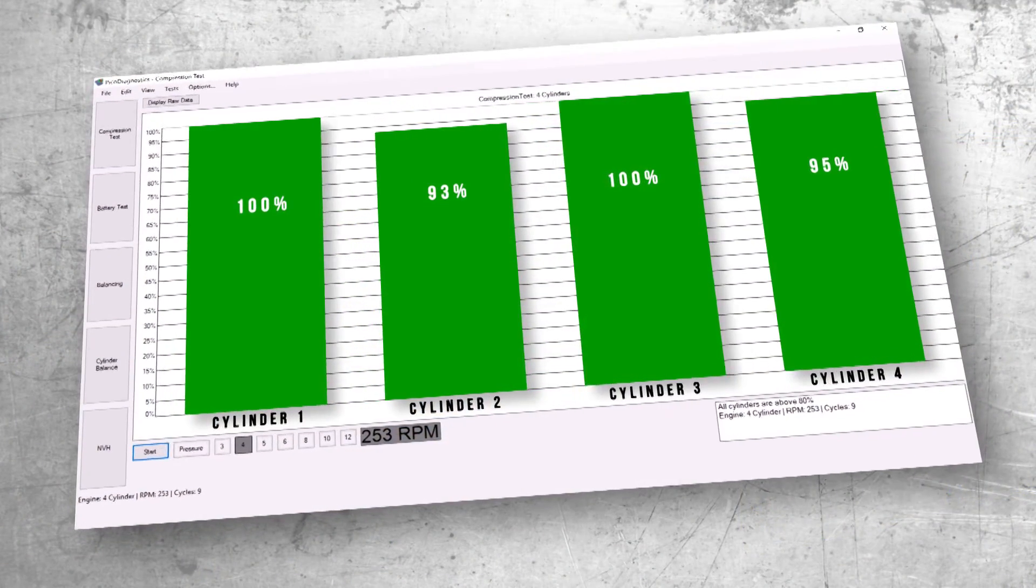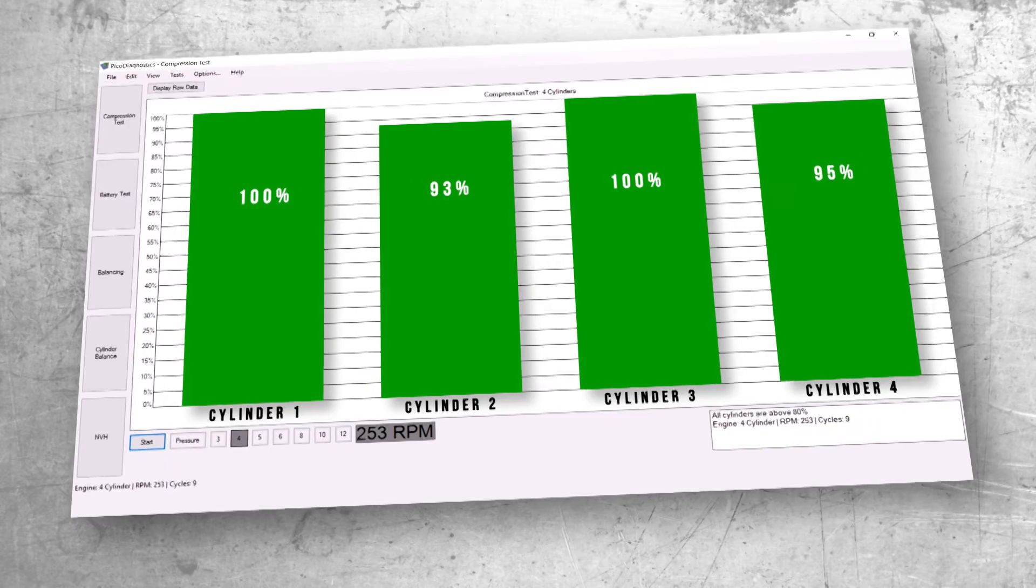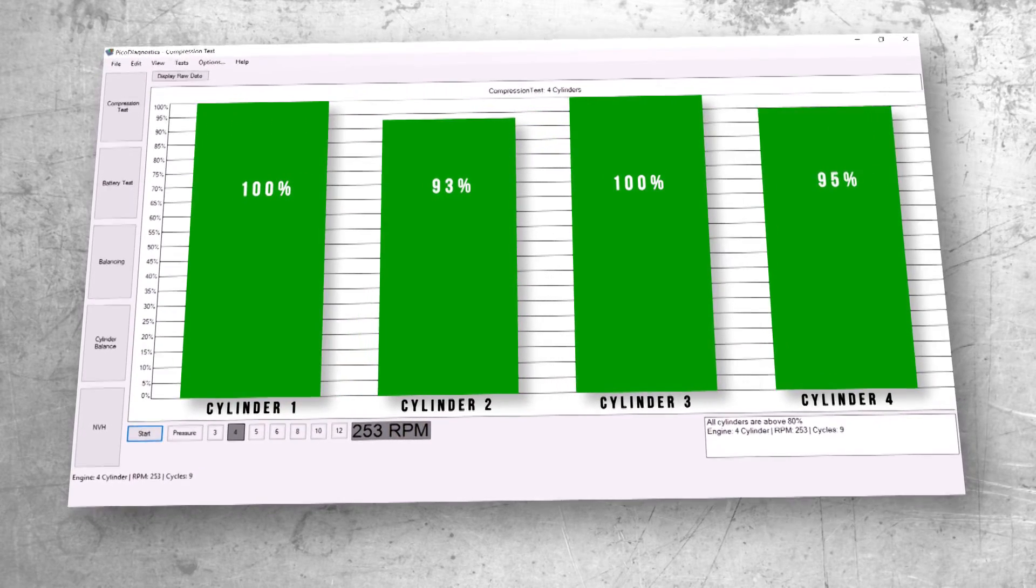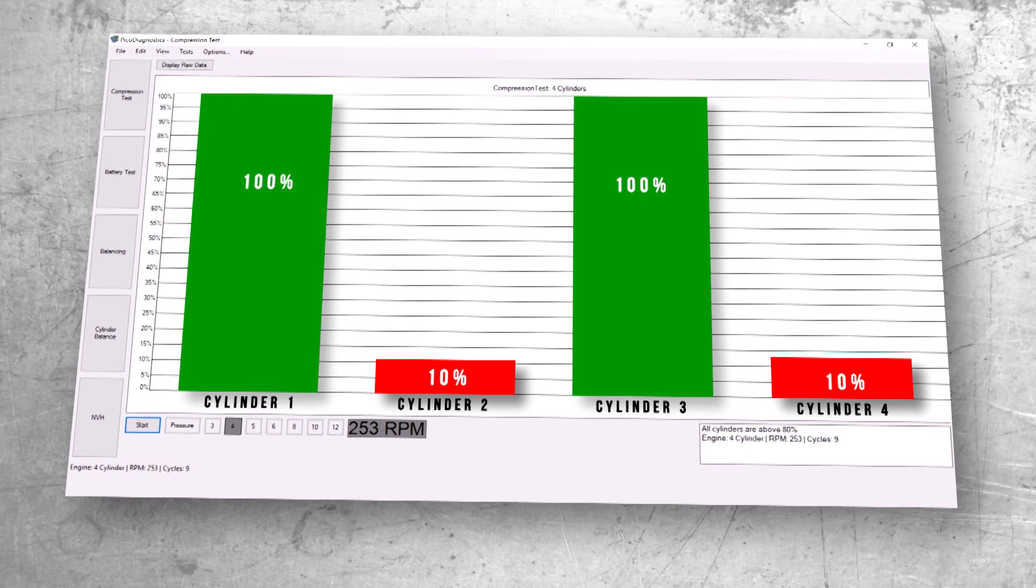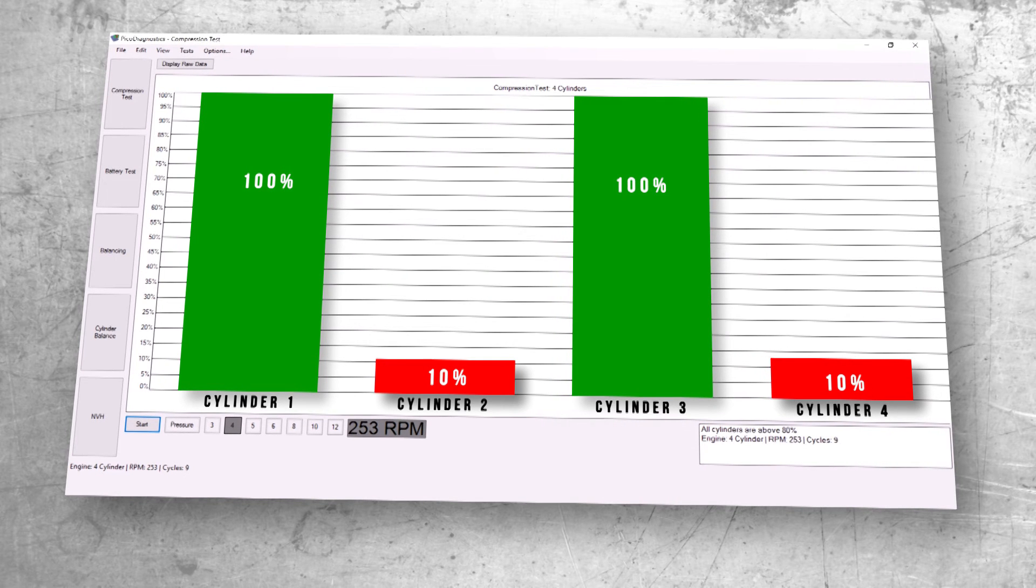As you can see by our results, the mechanical side appears to be okay. If there was a problem here, we would need to use a mechanical compression gauge and retest all cylinders the old-fashioned way.